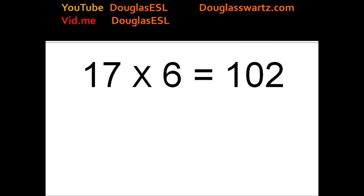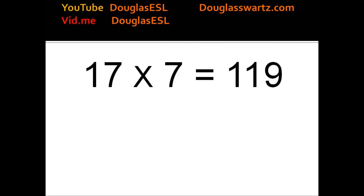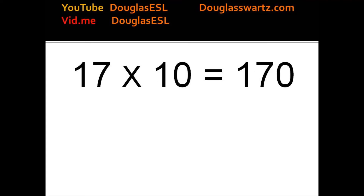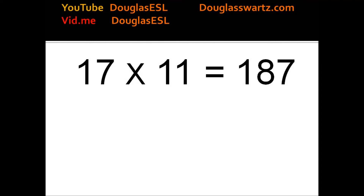17 times 6 equals 102. 17 times 7 equals 119. 17 times 8 equals 136. 17 times 9 equals 153. 17 times 10 equals 170. 17 times 11 equals 187.